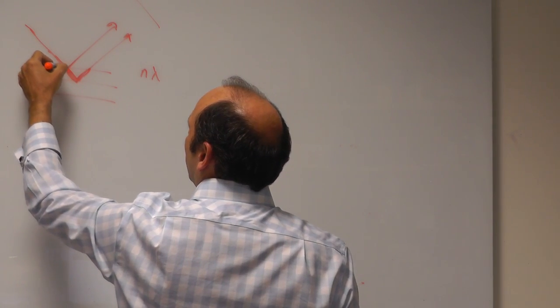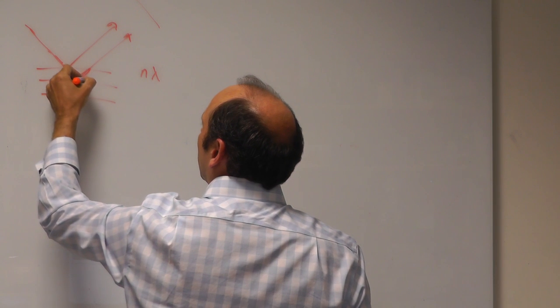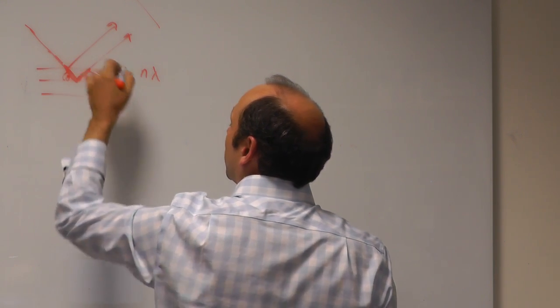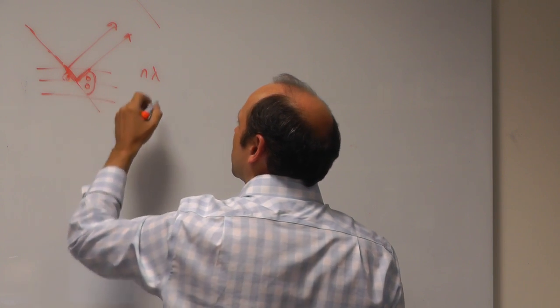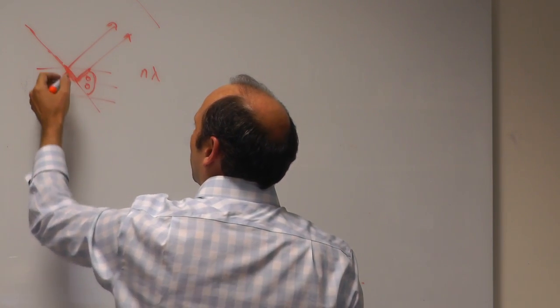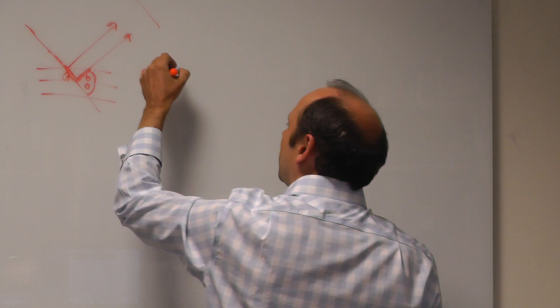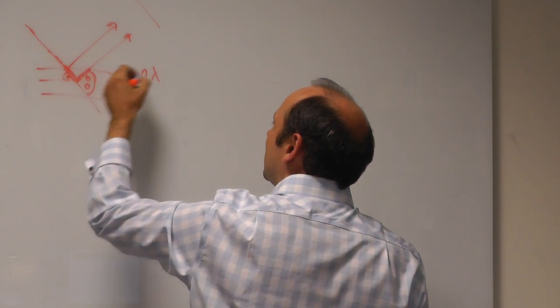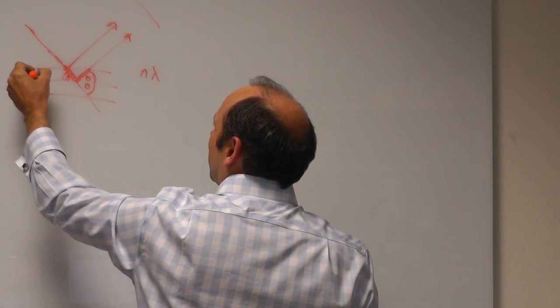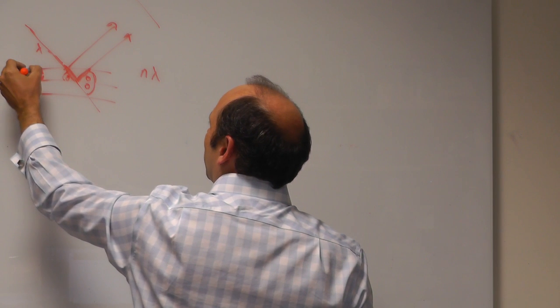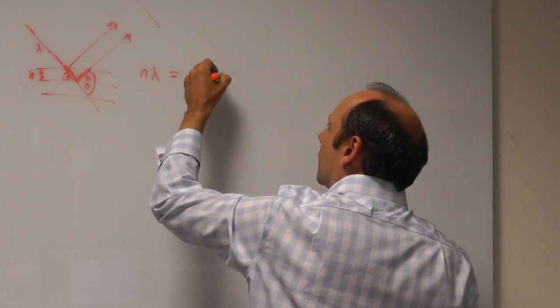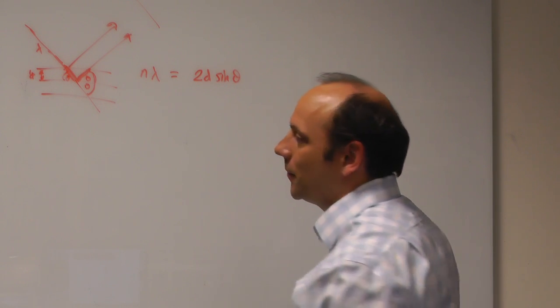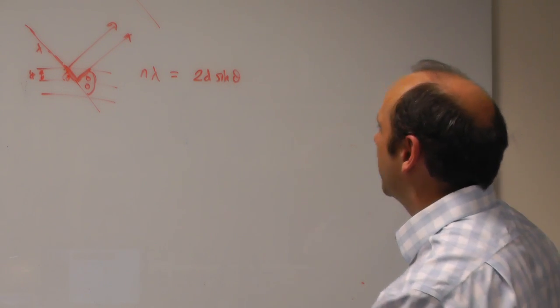So if we have an incident angle theta, an outgoing angle theta, the diffraction is diffracted through a total angle of two thetas, but we measure one theta. This extra path length is equal to d sin theta, where this is d, and the wavelength of the radiation is lambda. So we've got two of those extra path lengths and sin theta, and that's called Bragg's law.